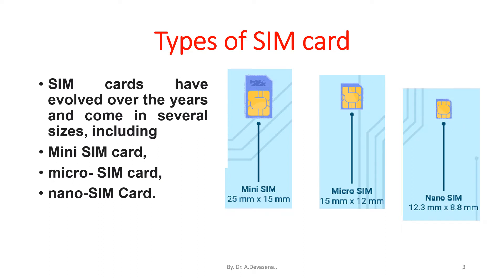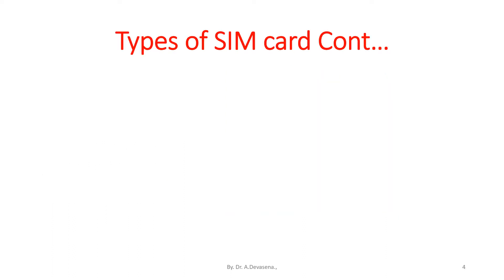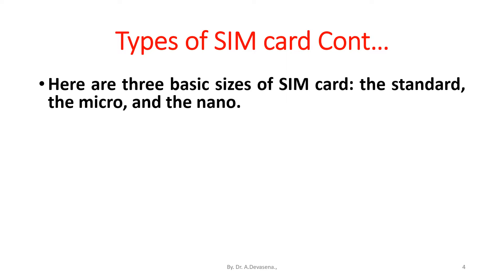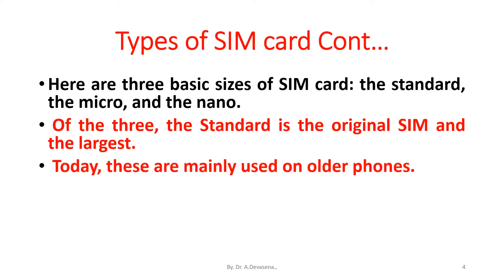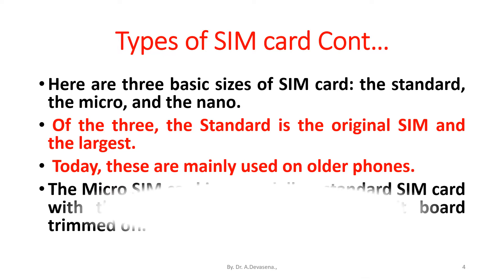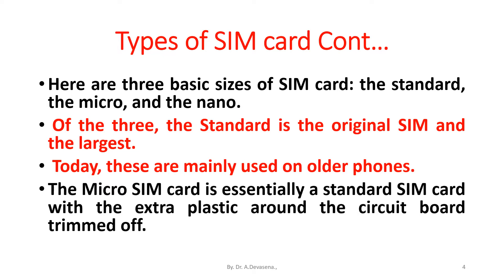The size of the nano SIM card is 12.3 mm x 8.8 mm. There are three basic sizes of SIM card: the standard, the micro, and the nano SIM cards. Of the three, the standard is the original SIM and the largest, mainly used on older phones today. The micro SIM card is essentially a standard SIM card with the extra plastic around the circuit board trimmed off.